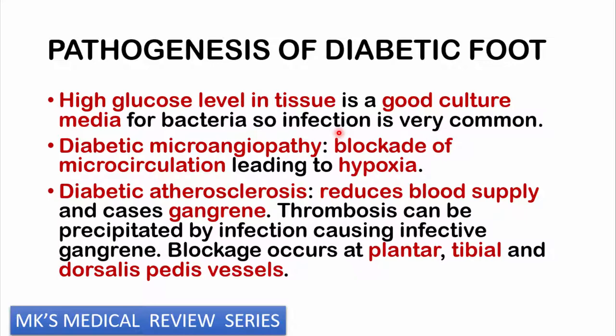The pathogenesis is characterized by a multifactorial etiology — many things may cause diabetic foot. The underlying problem is a high blood glucose level, either due to peripheral insulin resistance in type 2 diabetes or an absolute insulin deficiency in type 1. Because glucose is not entering the cells, there's a high concentration in the blood and tissues. Microorganisms use this glucose to produce energy, providing a good culture medium for bacteria — which is why infections are very common.